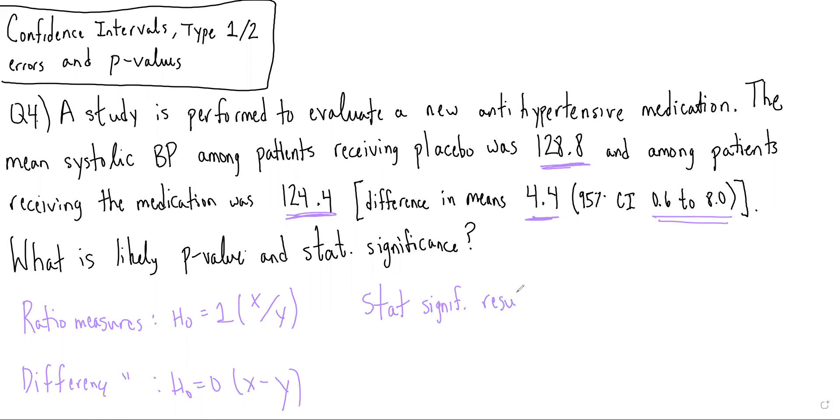Because it is a statistically significant result, we would imagine that the p-value would be less than 0.05.